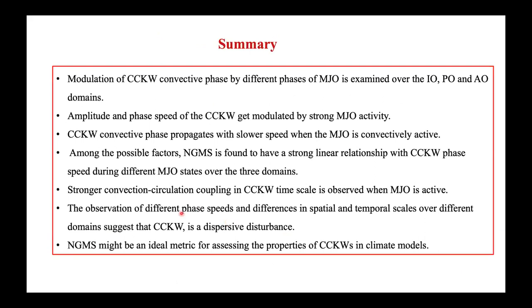To summarize: CCKW convective phase variation is influenced by different MJO phases over the Indian Ocean, Pacific Ocean, and Atlantic Ocean. Both the amplitude and phase speed of CCKWs are modulated by MJO activity; CCKW convective phase propagation is slower when the MJO is convectively active. Among the factors examined — vertical structure, convection-circulation coupling, and NGMS — NGMS shows the strongest linear relationship with CCKW phase speed across different MJO states and domains. NGMS may be a useful metric for assessing CCKW properties in climate models.